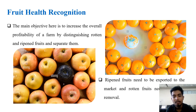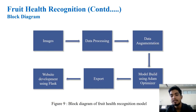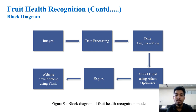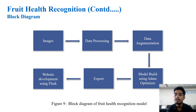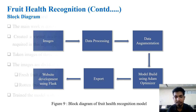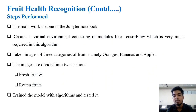The main objective of the fruit recognition model is to increase the overall profitability of the farm by distinguishing rotten and ripened fruits and separating them. We took images from the Kaggle dataset, processed the data, and performed data augmentation to increase the number of images. We built the model using the Adam optimizer, which was the best suited for our model, and then exported the model and created a website using Flask.